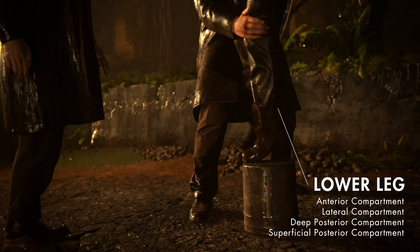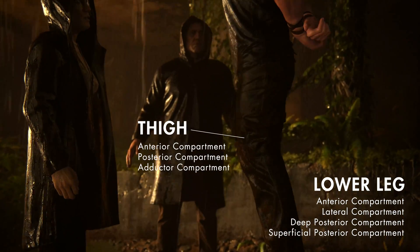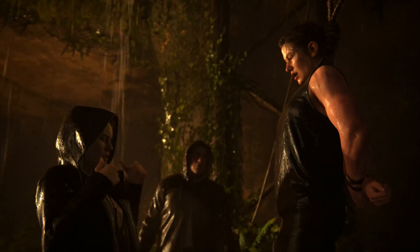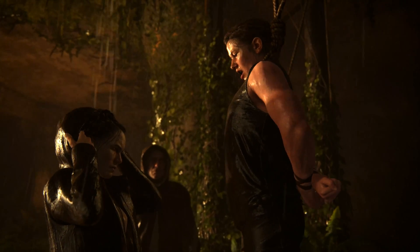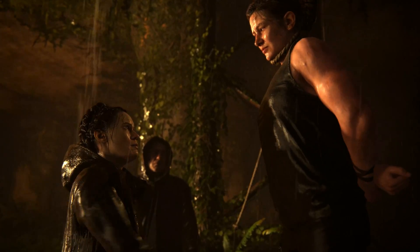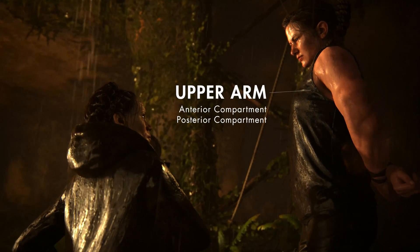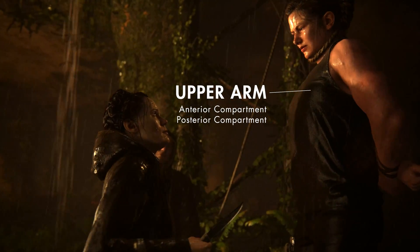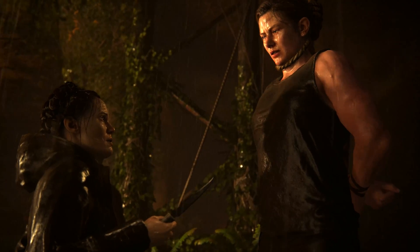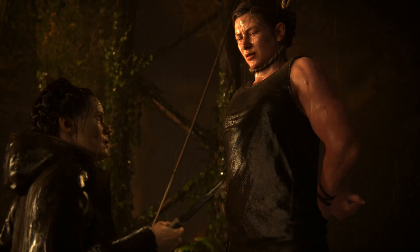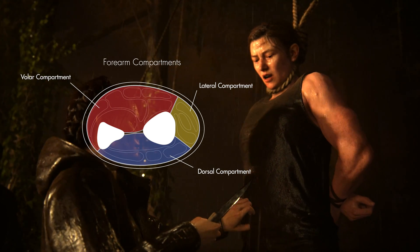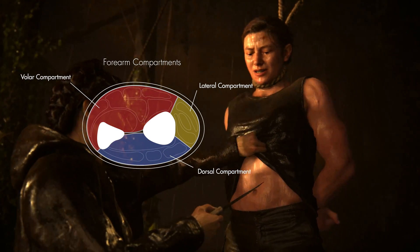The lower leg is divided into four compartments. The thigh has three compartments. The forearm also has three compartments. The upper arm is divided into two compartments. Remember that these compartments are closed spaces with limited room for expansion.